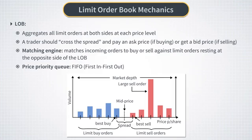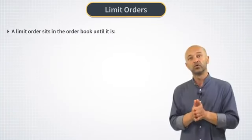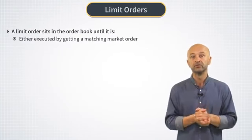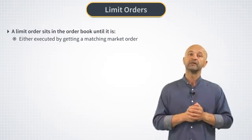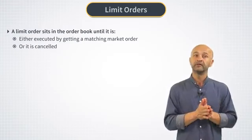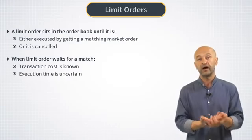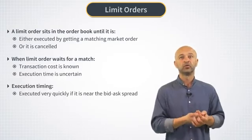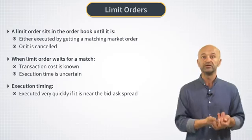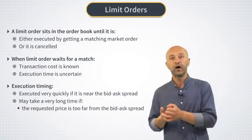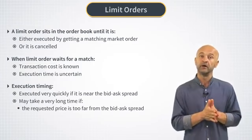A simple analogy from everyday life is when you call customer support of your utility provider company — you are put at the end of a queue of customers waiting to be served. Similarly, a new limit order will sit in a LOB until it's executed by matching a market order from the opposite side, or alternatively, it can get cancelled at any time. The execution price is known, but the execution time is uncertain. If the price level is very close to the current bid-ask spread, it will be executed quickly; if it's too far, such an order may sit long in the LOB.